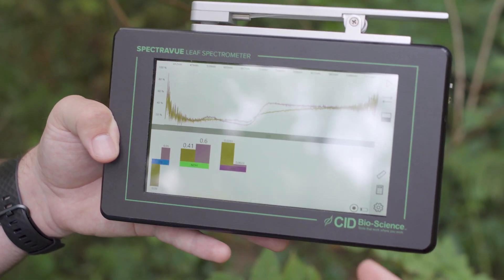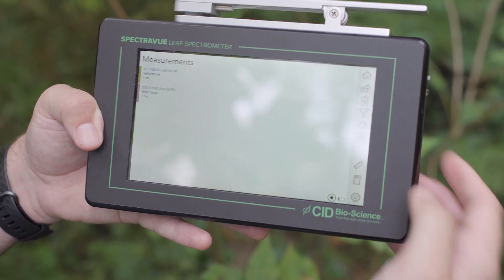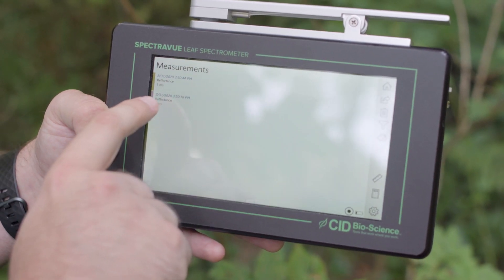You can also export all this data. You can simply view your measurements by clicking the ruler here, and you can see these two measurements that I took, and the time and the date at which they were taken.